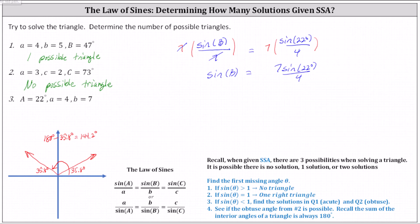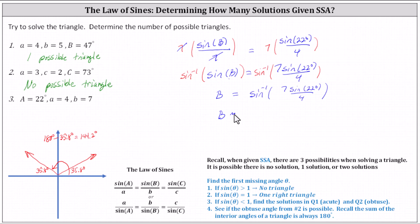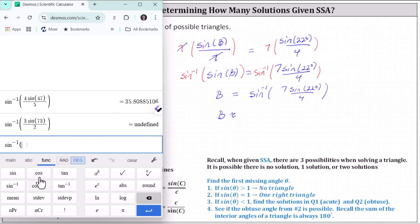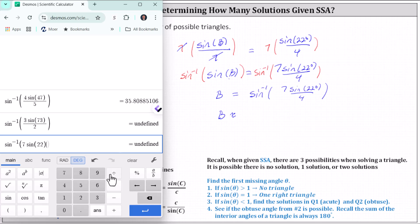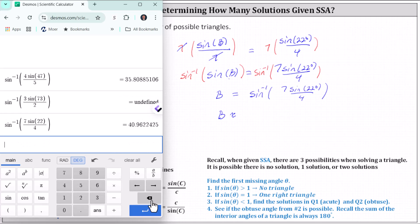Now we take the inverse sine of both sides to solve for B. So B equals inverse sine of seven sine 22 degrees divided by four. Going back to the calculator: Functions, inverse sine, main tab, seven sine 22, close parenthesis, divided by four, and enter. To one decimal place — because of the six we round up — the angle rounds to 41.0 degrees.